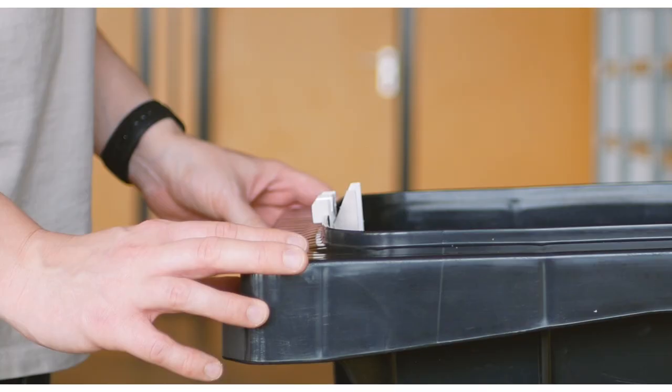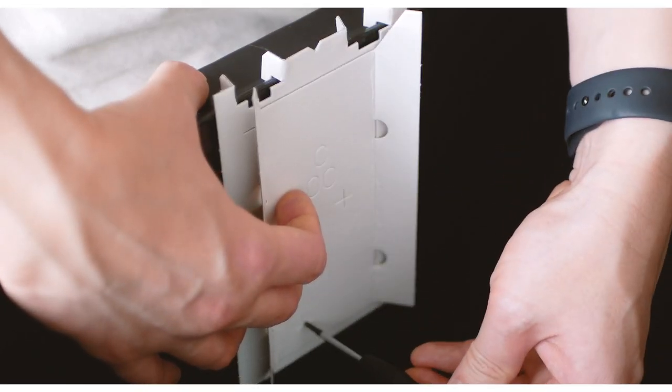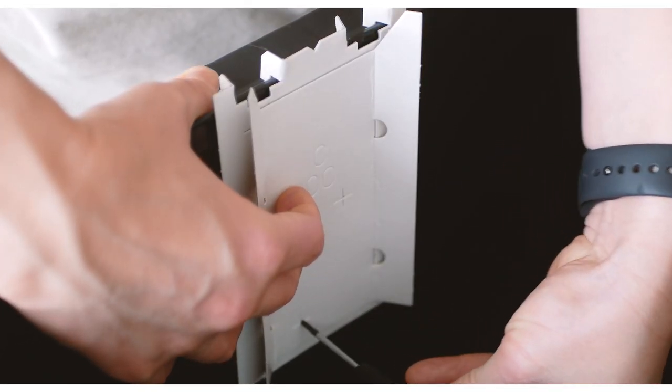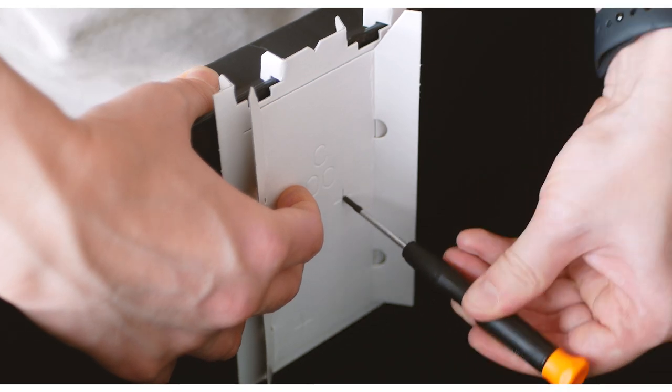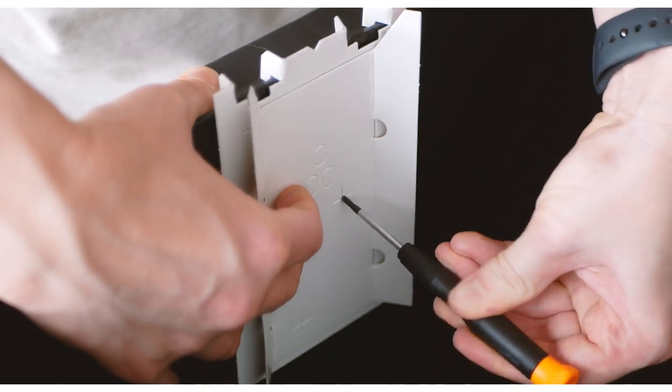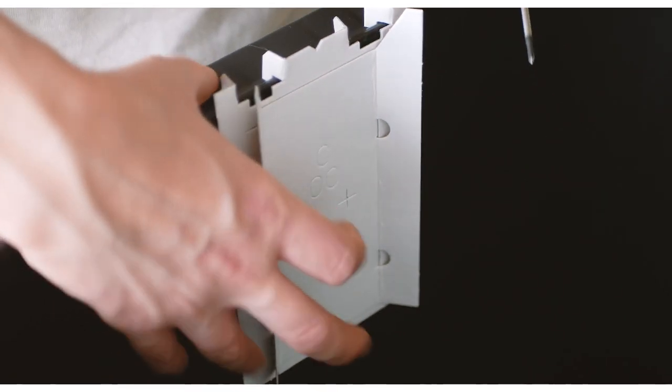Double-check the central alignment of the template and mark the drilling holes with a large, pointed nail through the crosses. Then you can remove the template.